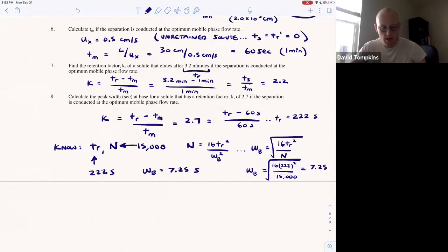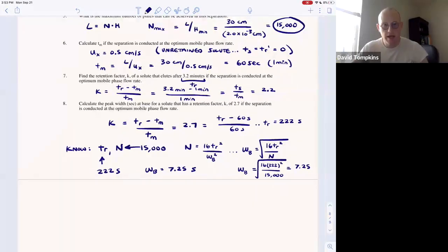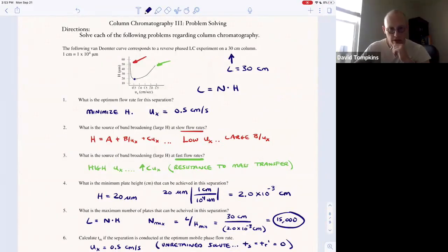Okay, so be able to interpret the Van Deemter plot and explain causes or sources of band broadening at different points on the plot, and also be able to select the optimum flow rate,